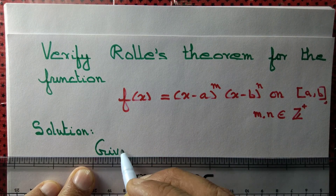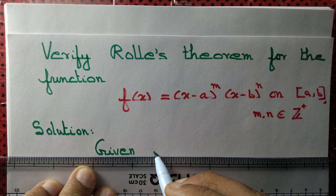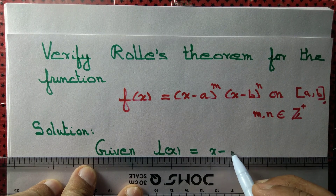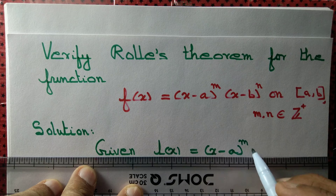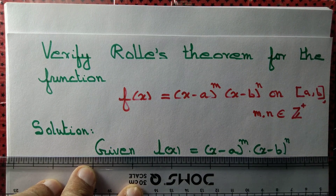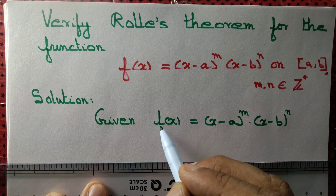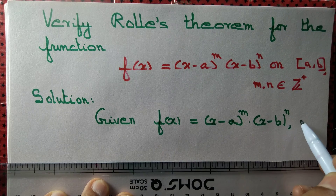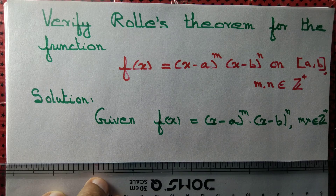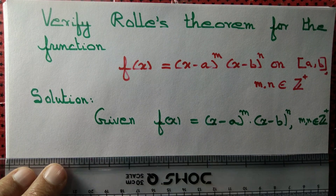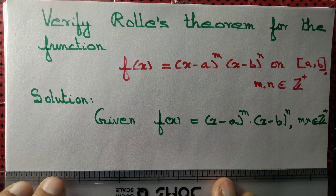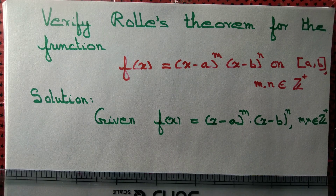Given f(x) equal to (x minus a) to the power m into (x minus b) to the power n, where m and n are positive integers. If we want to verify Rolle's theorem, first of all we need to check that the conditions for Rolle's theorem are satisfied.